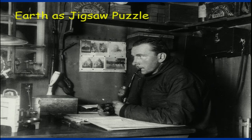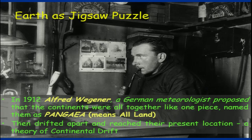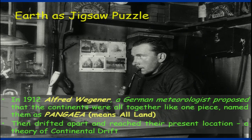In 1912, Alfred Wegener, a German meteorologist, proposed that the continents were all together as one piece and named it Pangea, meaning 'all land.' Then they drifted apart and reached their present locations. This theory was termed the continental drift theory.